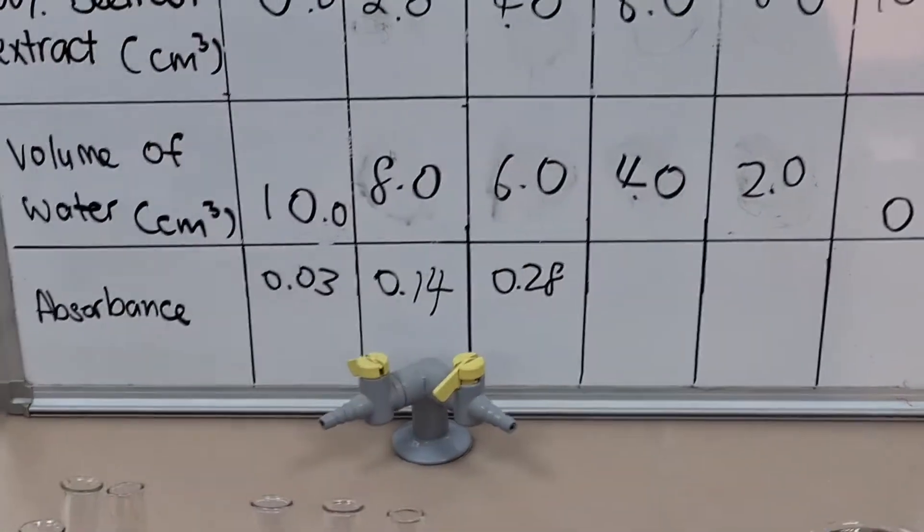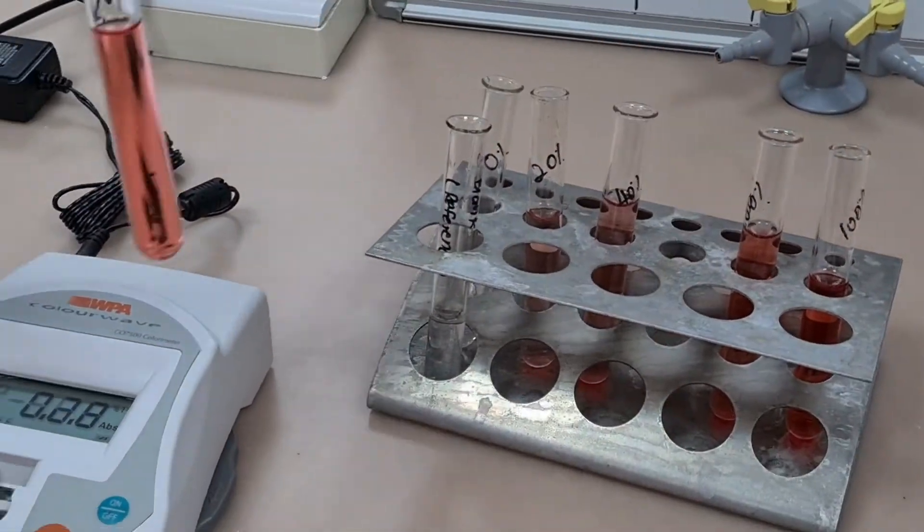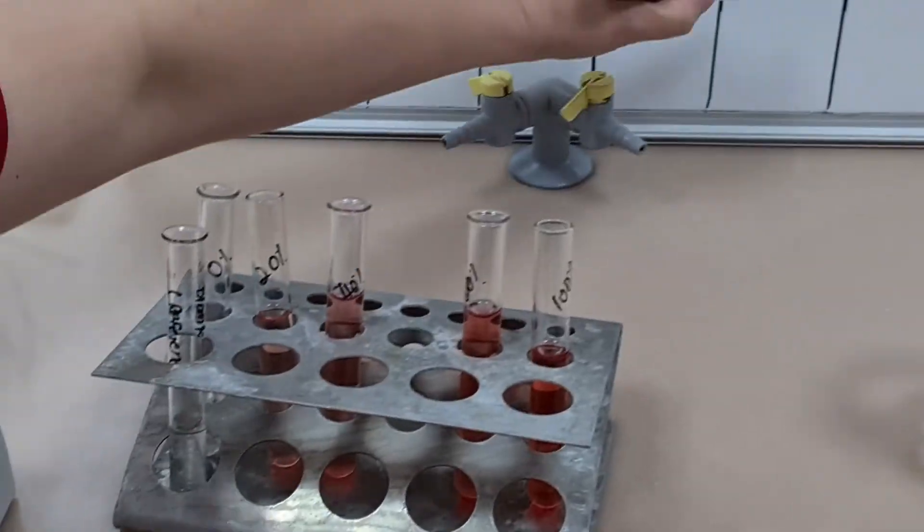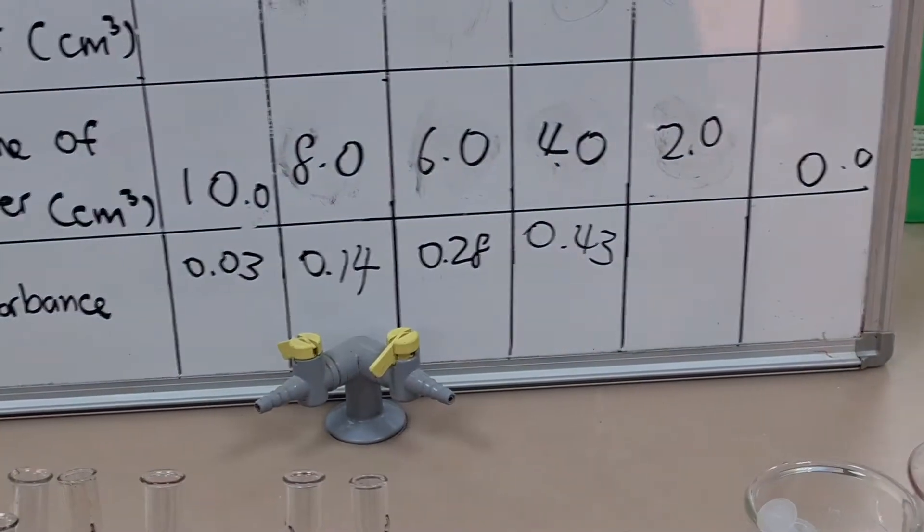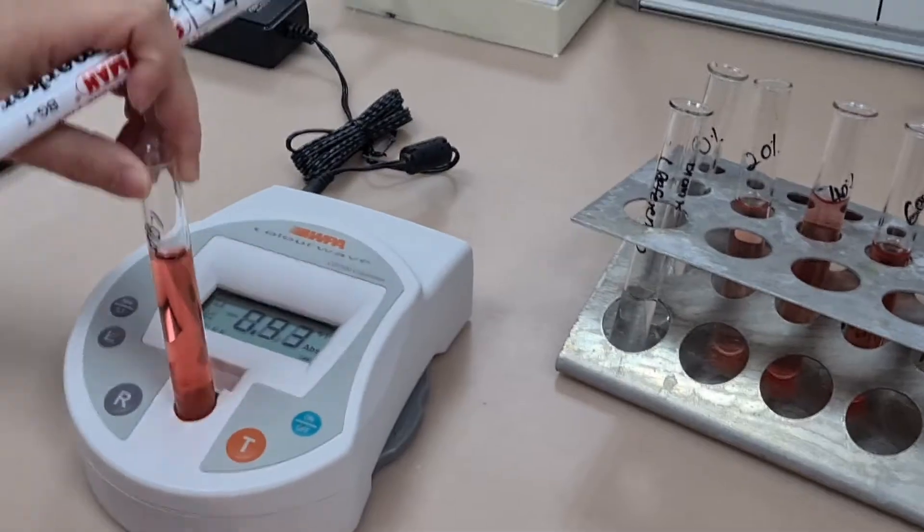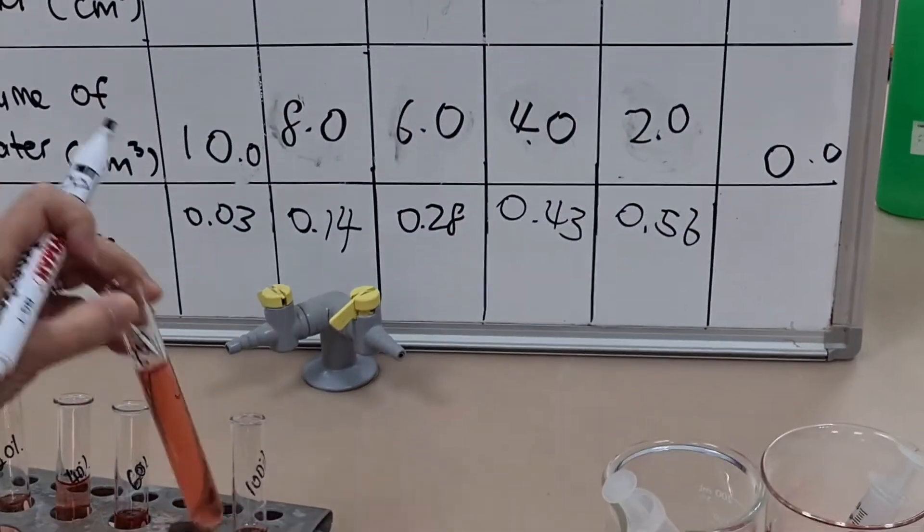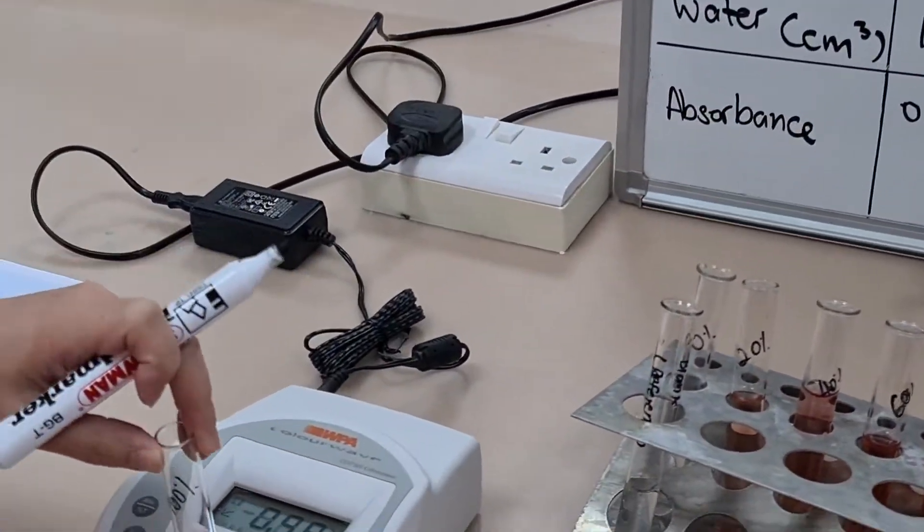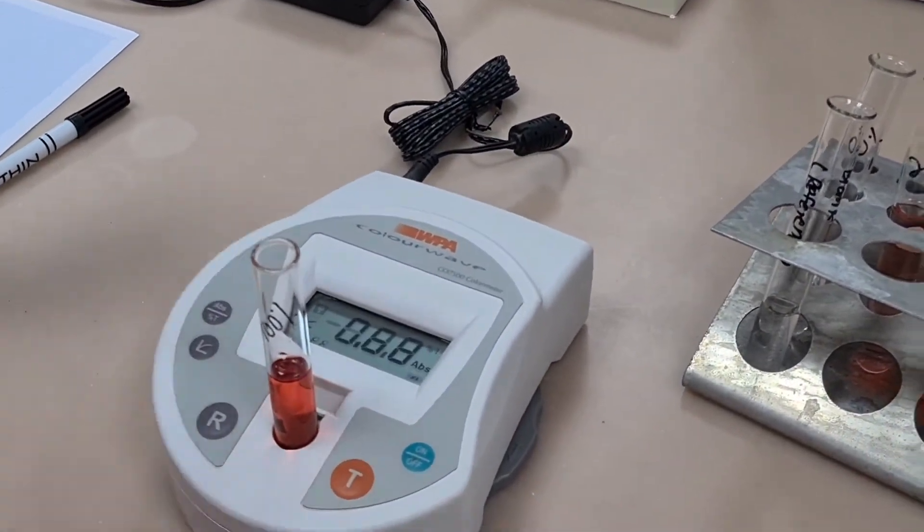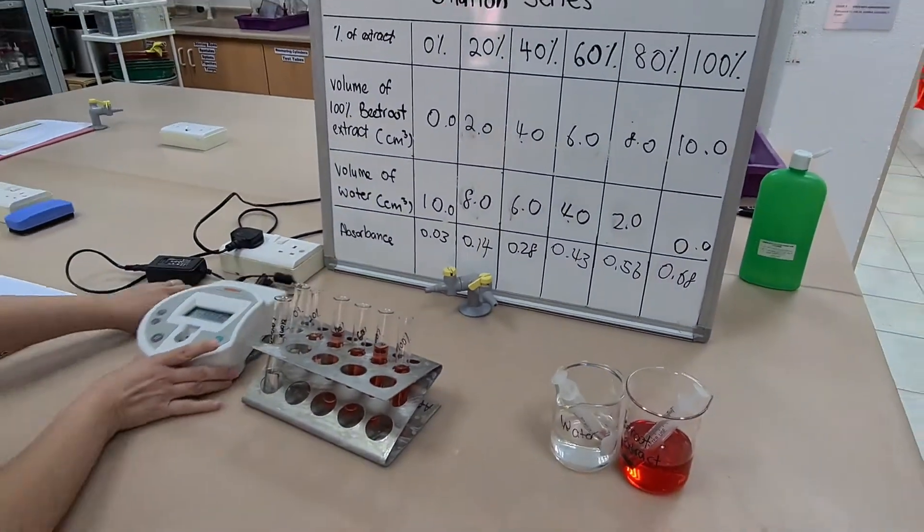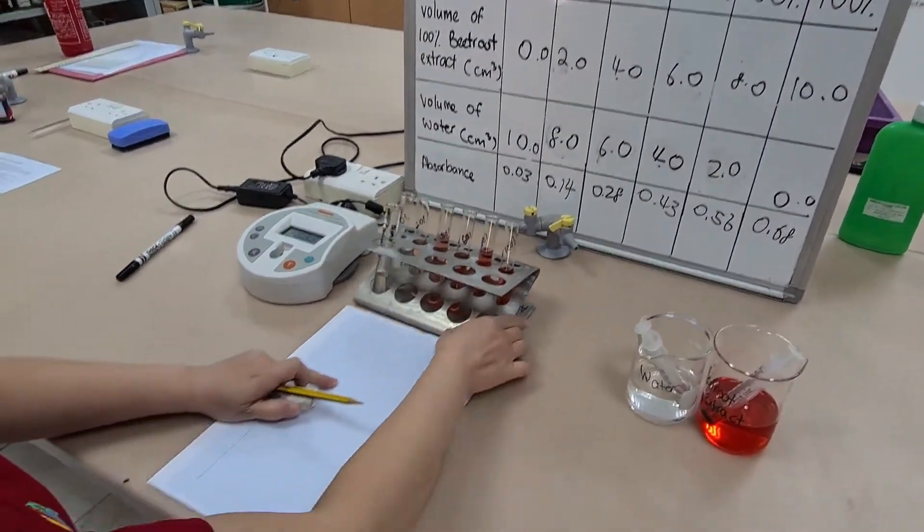And in between measurements if you want to you can reference it again, you can tare it, you can put your sample of water back in and press the R and make sure that each time you remove one of your samples it returns to zero. So here we move on to some of the more concentrated dilutions and you can see that the absorbance is actually increasing. In other words our extract is absorbing more of the light.